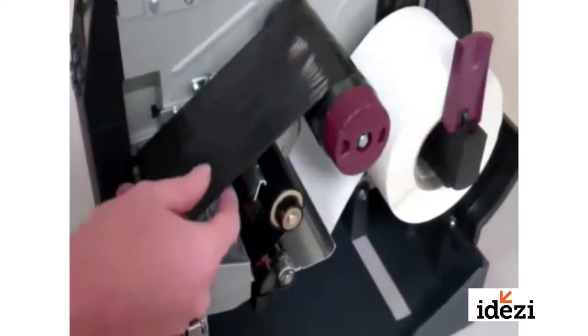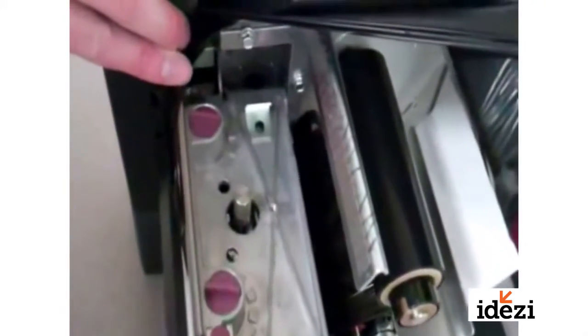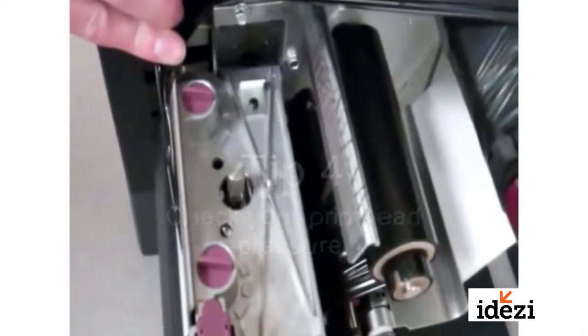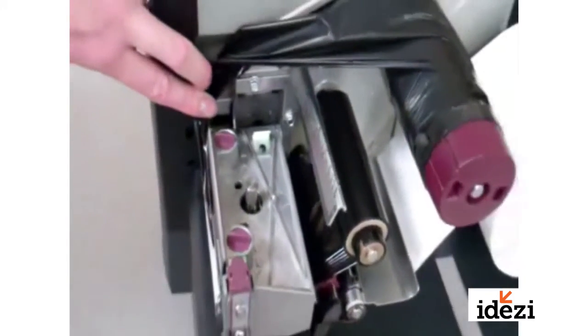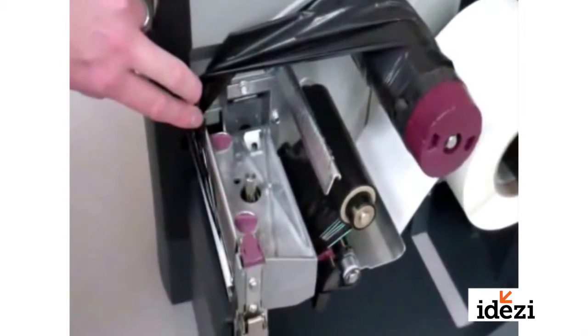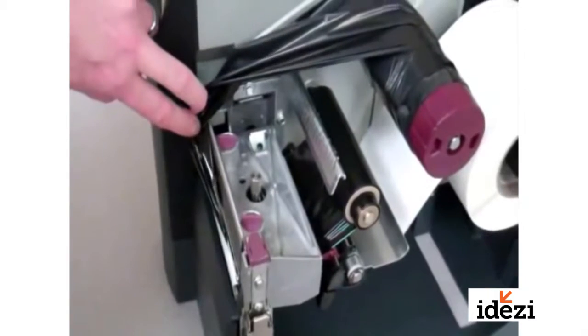One thing that you can check as a user is going to be your print head pressure. In my particular printer here, there are these two purple knobs on top of the print head. Most printers have a pressure adjustment. You'll just need to simply check on your printer to find out exactly how to make that adjustment. Making that adjustment will even out the pressure all the way across the print head and hopefully prevent ribbon wrinkle.